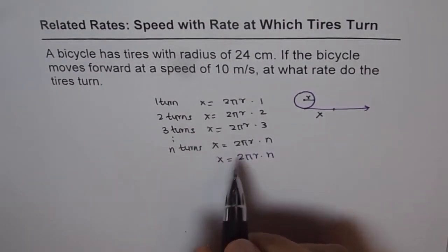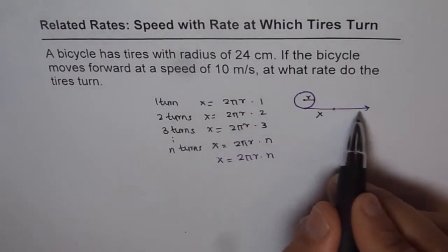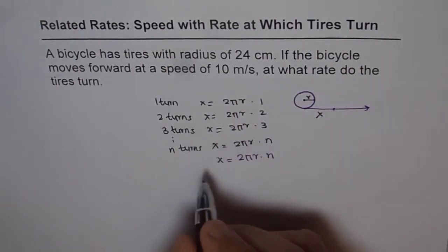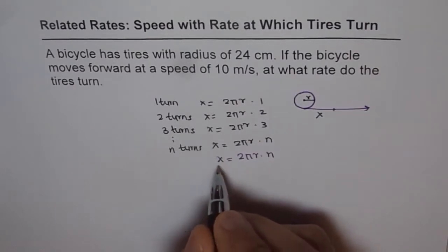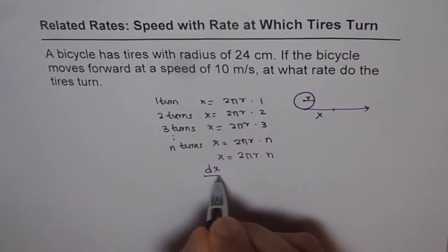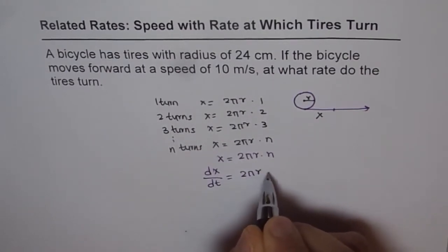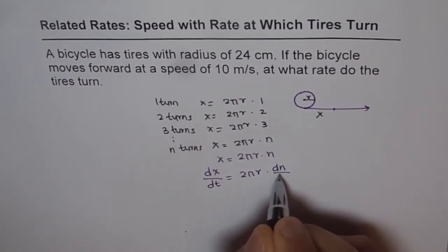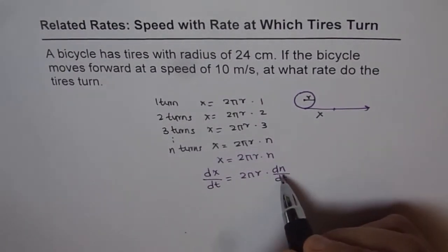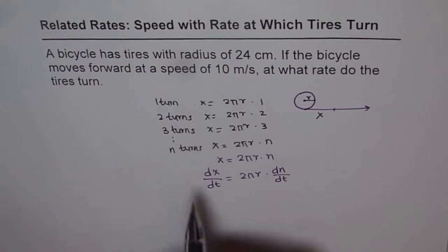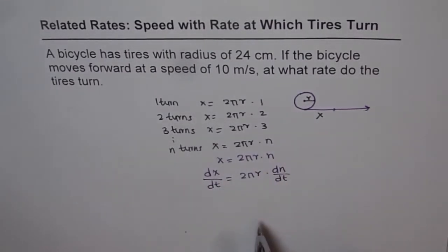Since with time both are changing, with time the speed with which the bicycle is being run, we can differentiate both sides by time. We get dx/dt equals 2πr dn/dt. Here, radius is constant, and number of turns is changing with respect to distance moved. Now dx/dt and dn/dt are related.